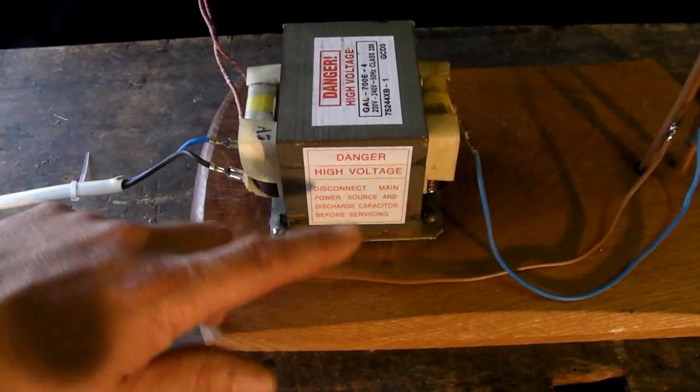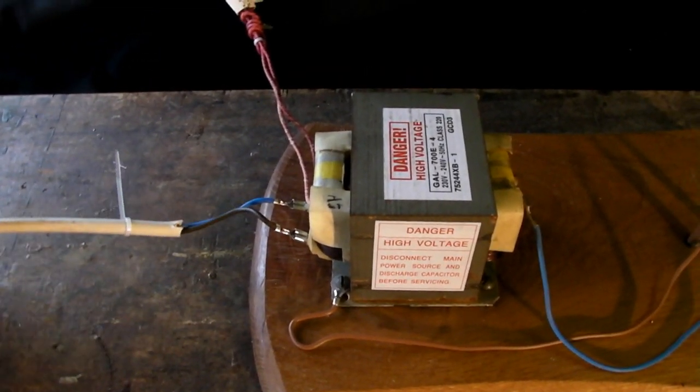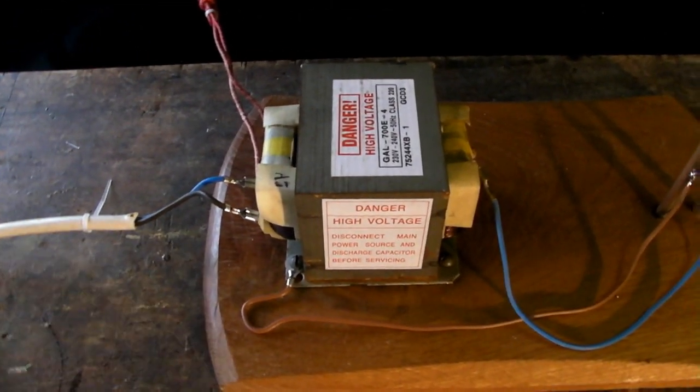You have the primary coil which is a coil of wire attached to the input. Now our input here comes straight from the mains so it's at 230 volts which is what we get in the UK.